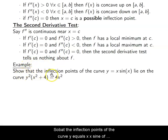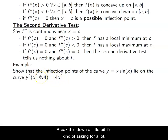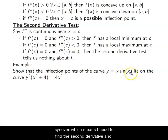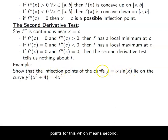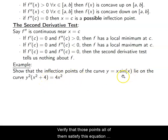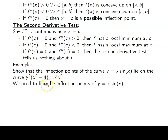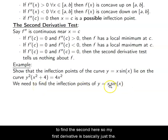Let's do an example: show that the inflection points of the curve y equals x times sine of x lie on the curve y² (x² + 4) = 4x². We want to find the inflection points first and foremost for x sine of x, which means I need to find the second derivative and find all the times when it equals zero. Once I do that, this problem is asking me to verify that those points all satisfy this equation — meaning that if I plug in x and y, I'll always have equality on both sides.